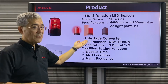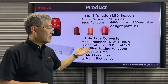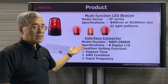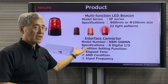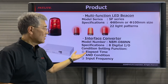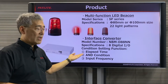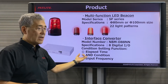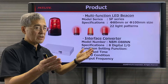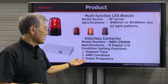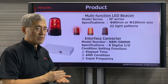The interface converter is the NBM D88NN. It has 8 digital inputs and outputs and has a condition setting function. With this function, you could set triggers based on elapsed time. This AND condition allows you to have multiple inputs before a trigger happens. The input frequency setting depends on how often something happens.